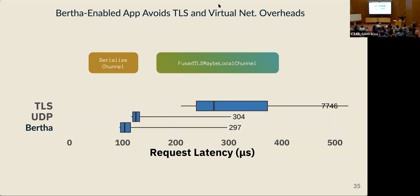With this optimization, we apply a fused version of the channel stack that checks whether the connection is remote and uses a TLS connection for remote connections and a plain fast path connection for local connections. We can see the benefit of different levels of optimizations: the cost of encryption with TLS, the cost of virtual networking with UDP, and then Bertha providing the best possible fast path performance on a local connection between two Docker containers.